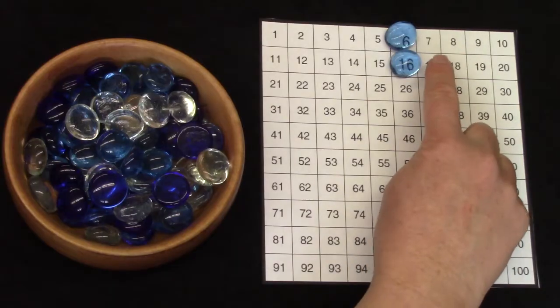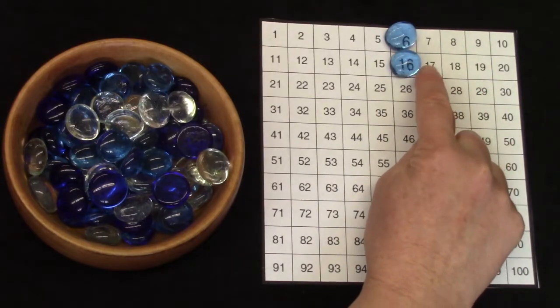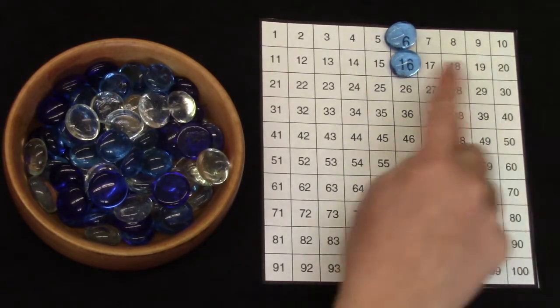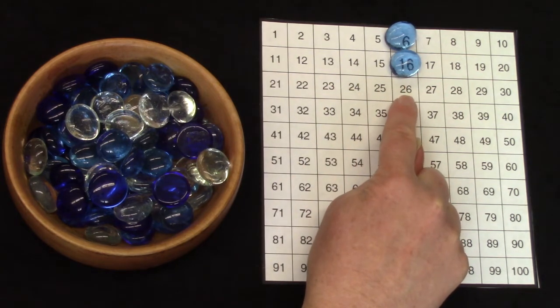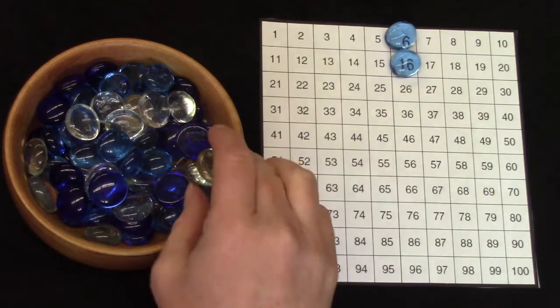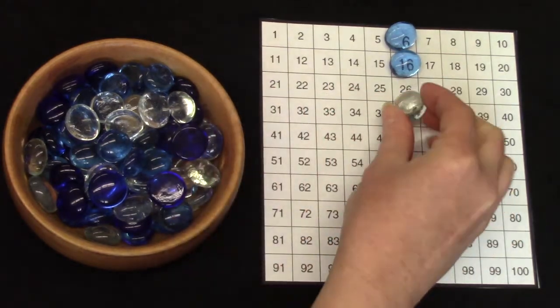All right, we have 6 plus 10 is 16. Well let's add 10 more to that number. Count with me: 1, 2, 3, 4, 5, 6, 7, 8, 9, 10. What number is 10 more than 16? You're right. It's 26. I'm going to cover that with a pretty gem.